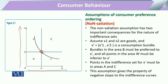اس indifference curve پر X1 اور X2 کے مختلف combinations ہو سکتے ہیں۔ ان combinations میں سے ایک missing چیز ہماری hypothetical budget line ہے۔ Budget line صرف اس ایک point پر tangent ہوئی ہے، اس لیے یہ ہمارا equilibrium point ہے۔ اس point کے left side پر جو indifference set کے points ہیں وہ A اور C کی left پر ہیں۔